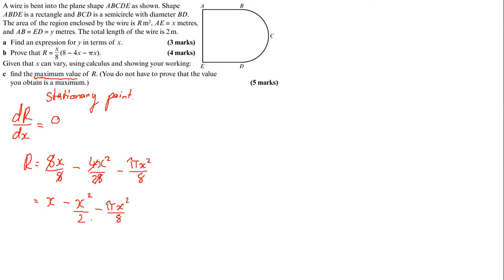Now differentiating with respect to x: dR/dx equals 1 minus x minus pi x over 4. The constant term differentiates away, the x squared over 2 term gives x, and the pi x squared over 8 term gives pi x over 4.